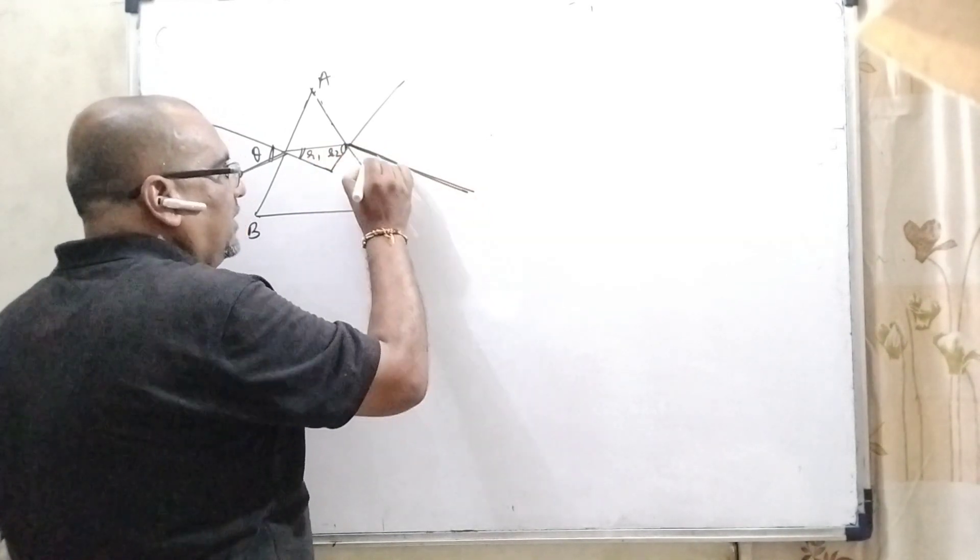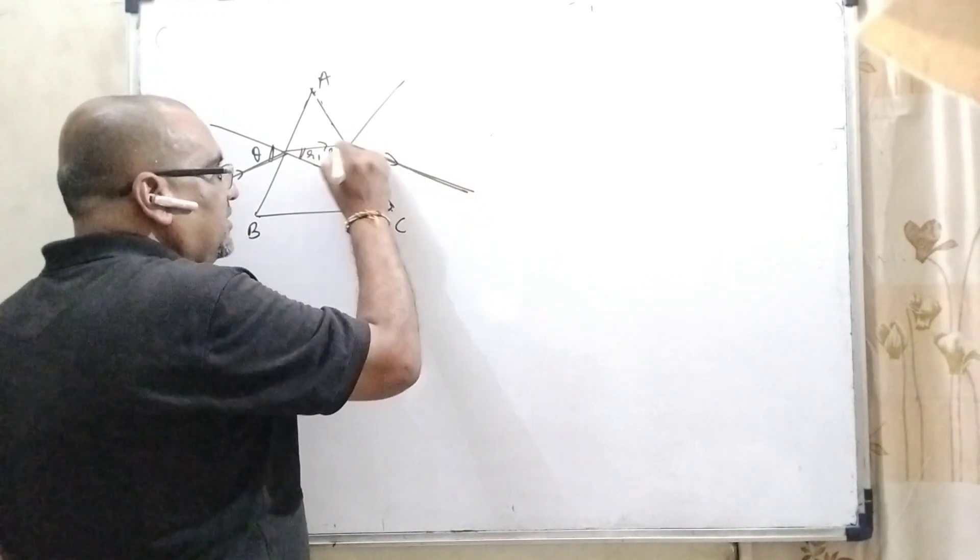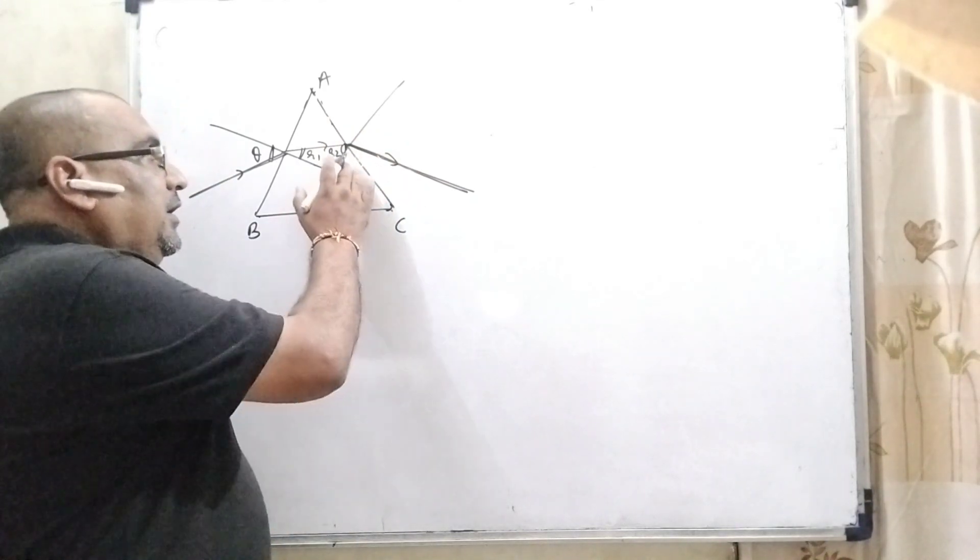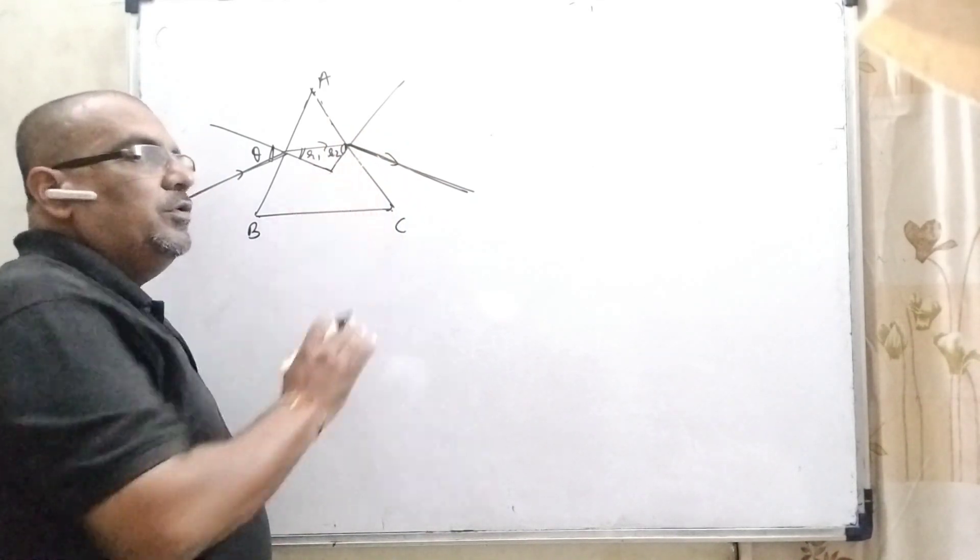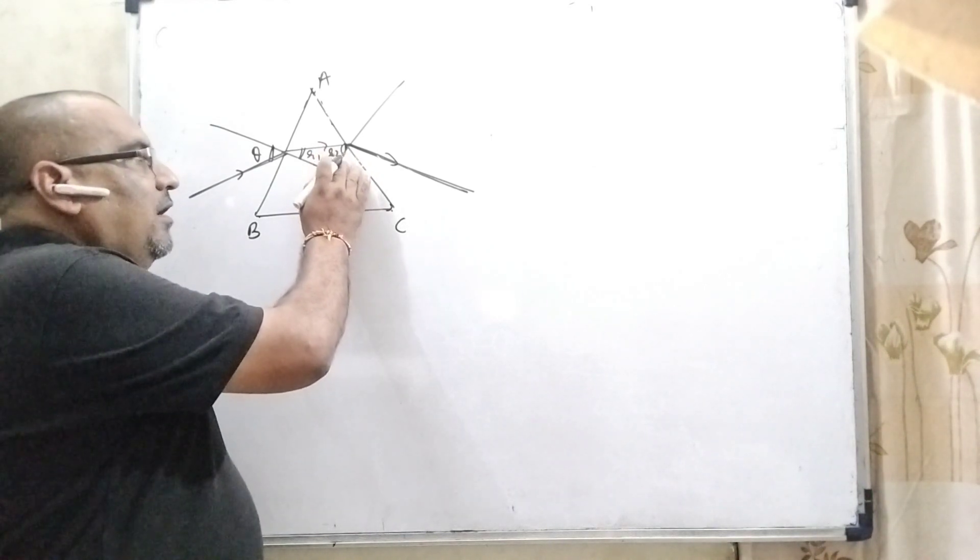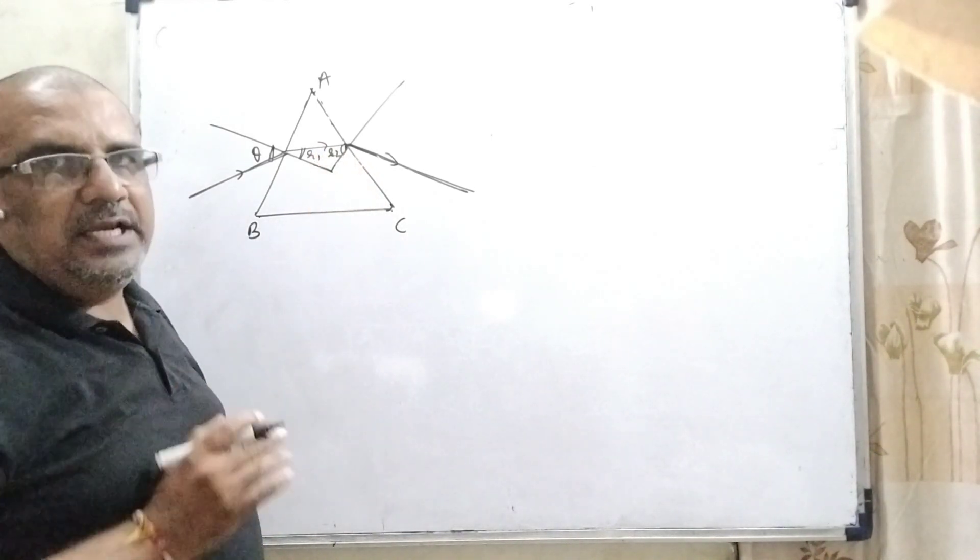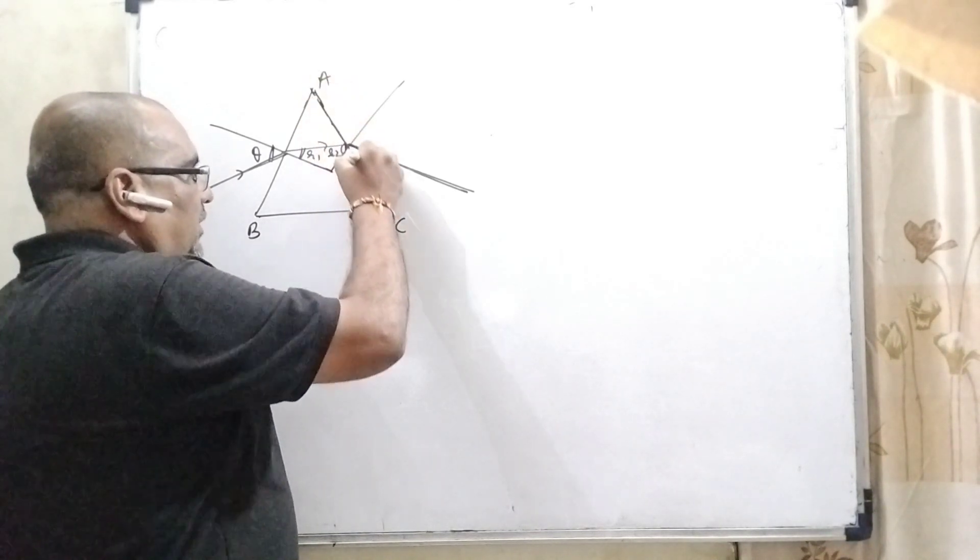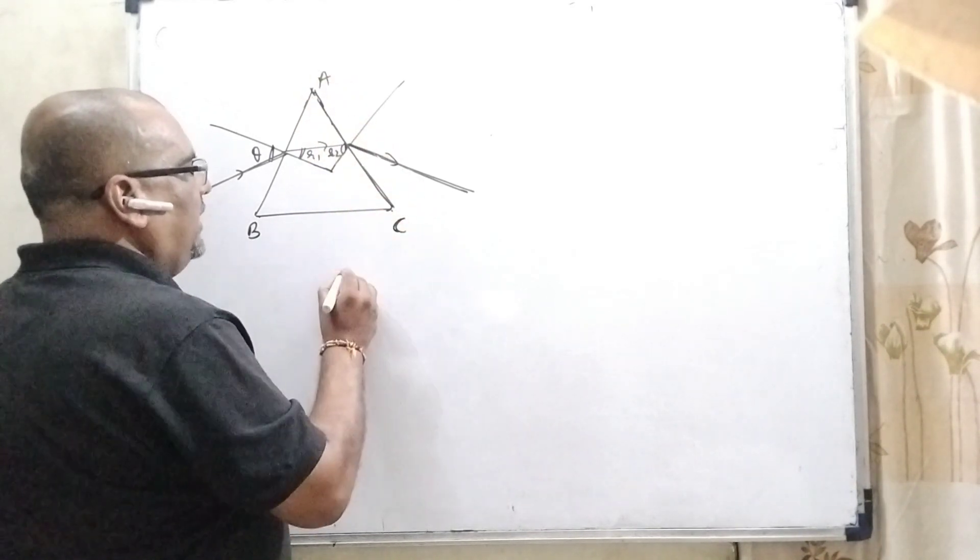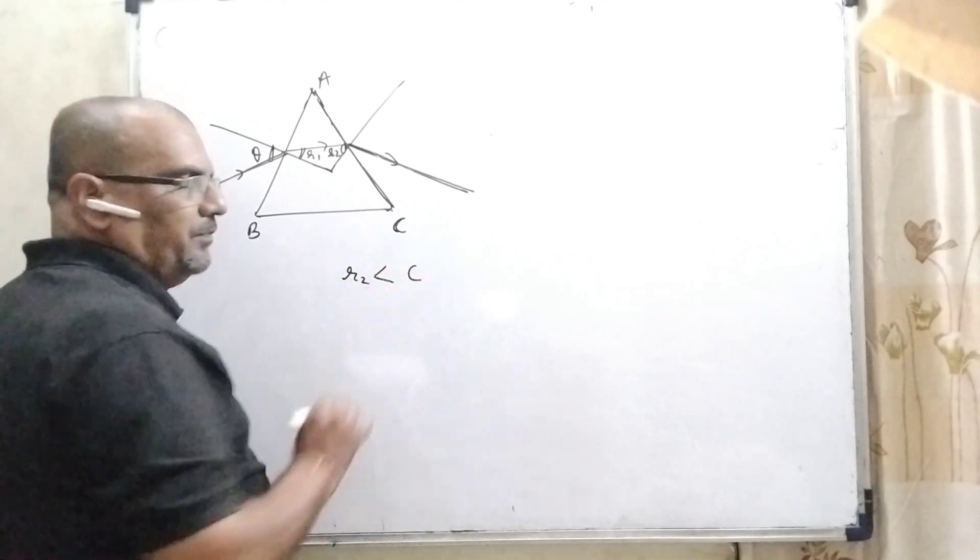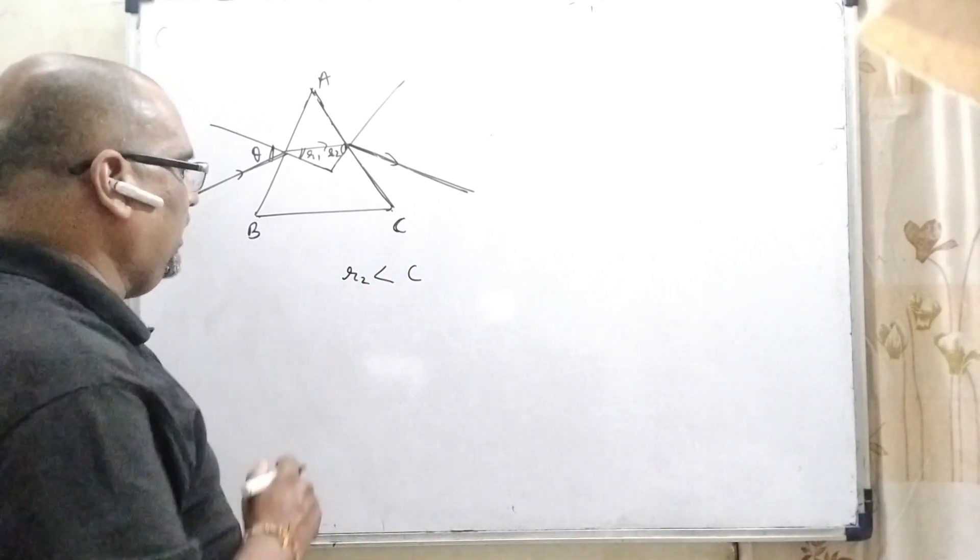Here, very important thing. The ray is emerged out from this surface AC. It means here there is no any total internal reflection phenomena. It means this angle of incidence is less than critical angle. So, starting from AC, as we know that here R2 is less than C. Here C means critical angle. Is it okay?